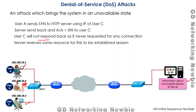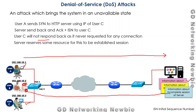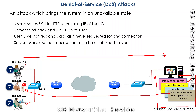Next, the same attacker uses the source IP address of yet another user and sends another SYN message to the server. The server sends back an acknowledgement and SYN to that user, who again will not respond, so the server reserves more resources and waits. The attacker keeps sending more SYN messages, and a point will come where the server has used all of its resources.